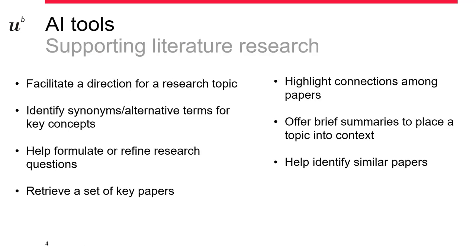There are various ways that AI tools can support literature research. For example, it can facilitate a direction for a research topic, whether that's through prompting or a visualization feature. It can also help identify synonyms for key concepts, help formulate and refine research questions with some prompting, retrieve key papers or studies, and highlight connections among papers that were not apparent. It can also provide some context into a topic, and though you need to be wary of summaries, summaries can be helpful especially if you are looking for background information. And then of course, identifying similar papers.